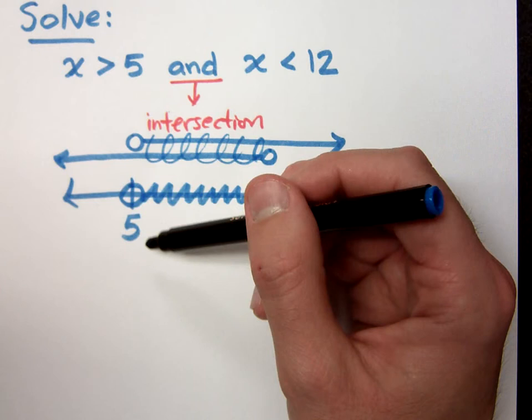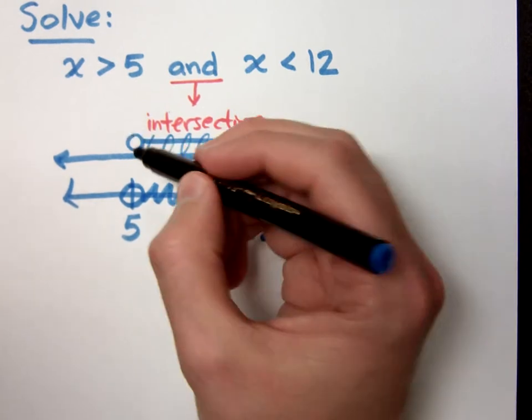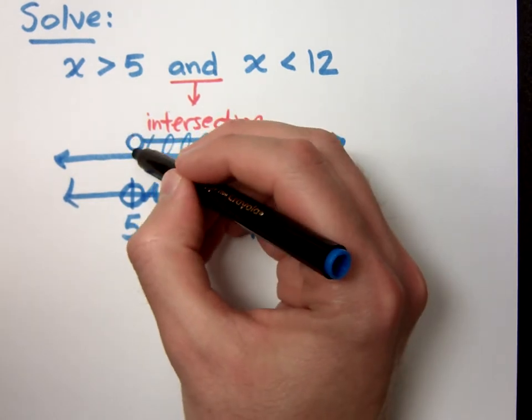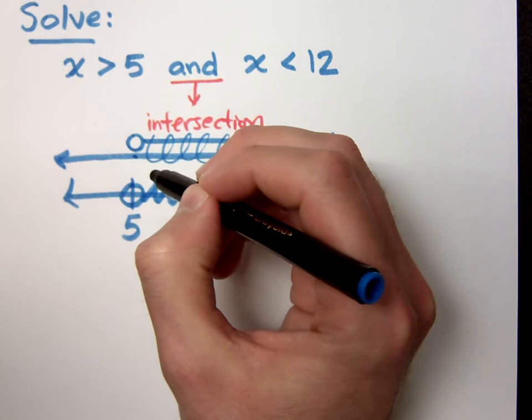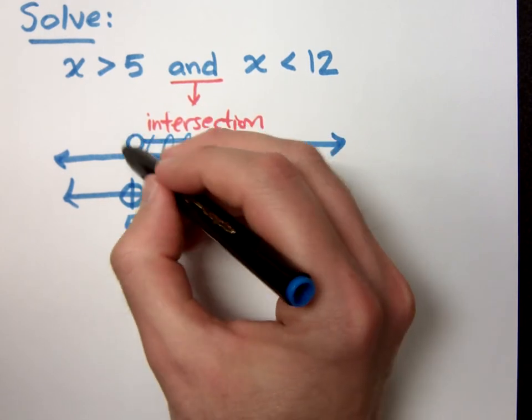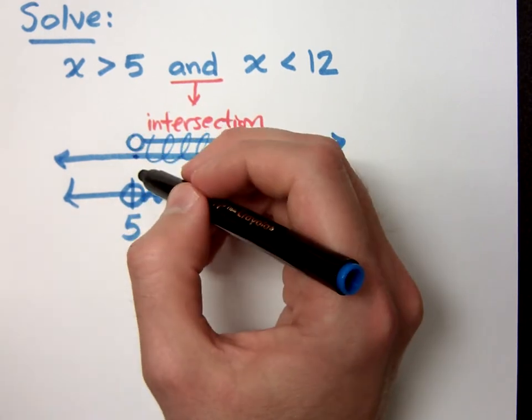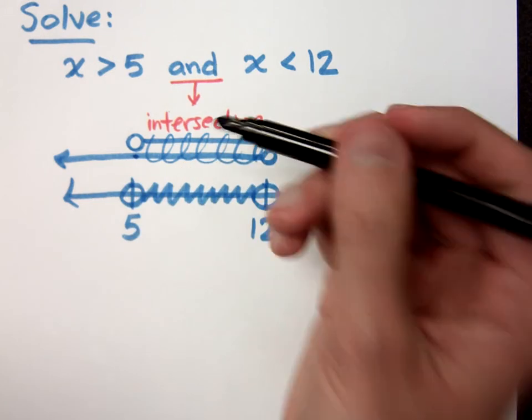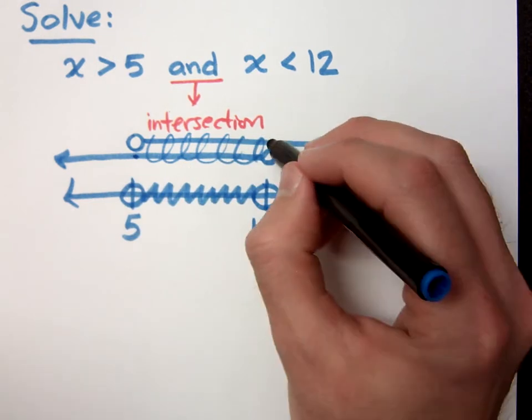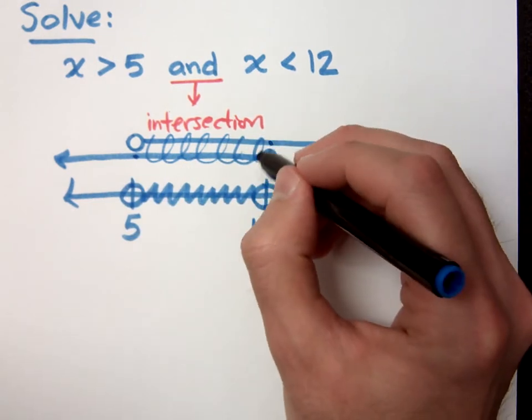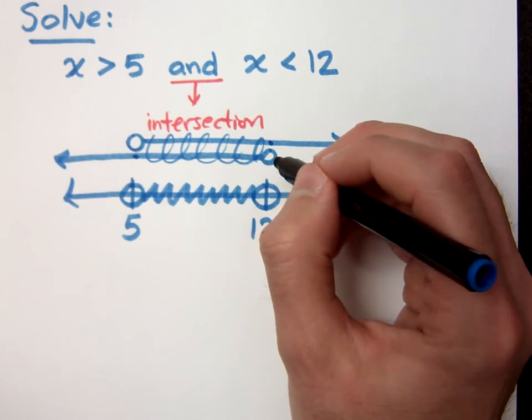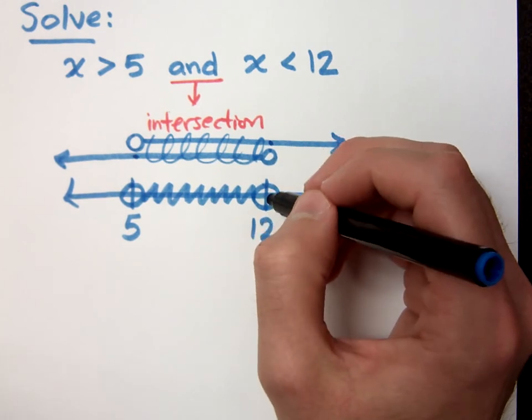Well, to be an intersection, it has to be true for both. 5 is not included here. And so, even though it's included here, it's not there. It doesn't satisfy both of those, so it stays open here. Same thing here for the 12. It's included here, but not on the other guy. So, since it is not included for both, it is not included in our solution set.